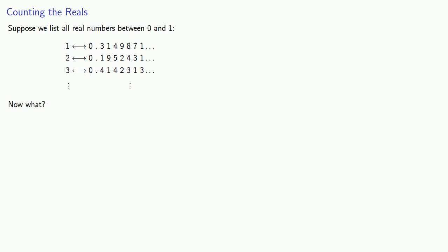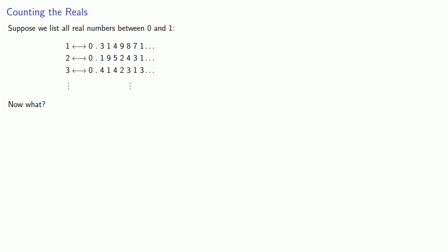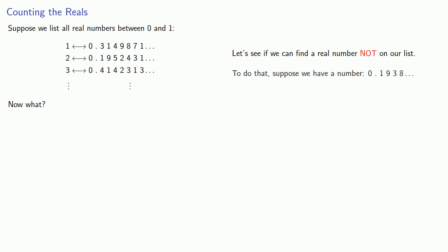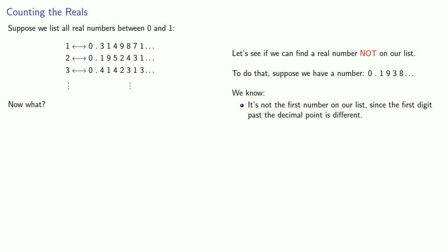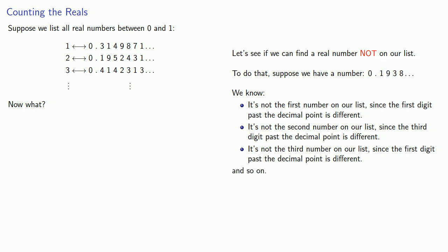Now what? The important idea to keep in mind: if you don't find the flaw in your reasoning, someone else will. We're listing all the real numbers between 0 and 1 — let's see if we can find a real number not on our list. How do we know a number's on our list? We know a number is not the first on our list since the first digit past the decimal point is different. It's not the second number since that third digit past the decimal point is different. And it's not the third number since the first digit past the decimal point is different. We can determine which number this isn't by checking the digits past the decimal point.